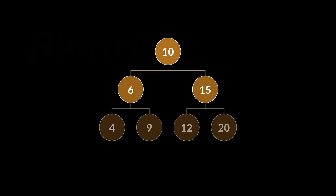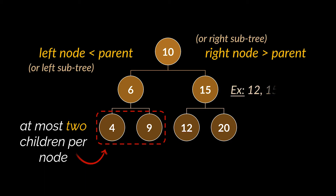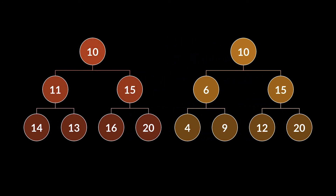Binary search trees are essentially a subtype or implementation of binary trees. So the nodes of a binary search tree can have at most two children, a left node and a right node. However, what differentiates a binary search tree from a general binary tree is that every left node or left subtree must be smaller than its parent, and every right node or right subtree must be bigger than its parent. The tree colored in red you can see to your left hand side is a binary tree, but it isn't a binary search tree because a few left nodes are bigger than their parents. Whereas the tree you see to your right hand side is indeed a binary search tree, as every left node is smaller than its parent, and every right node or subtree is bigger than its parent.